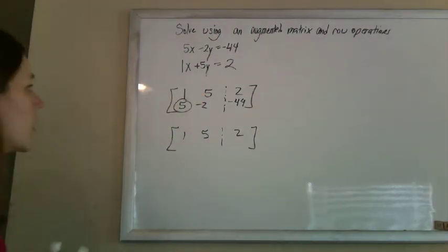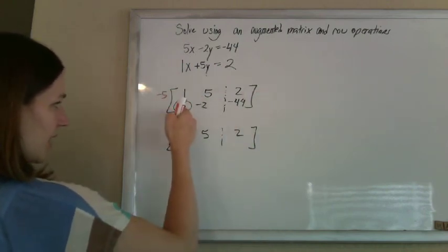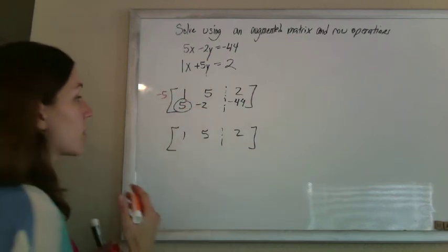So what I'm going to do is if I were to just multiply this whole first column by a negative 5 and add it to that, negative 5 plus 5 would give me zero, like I want.